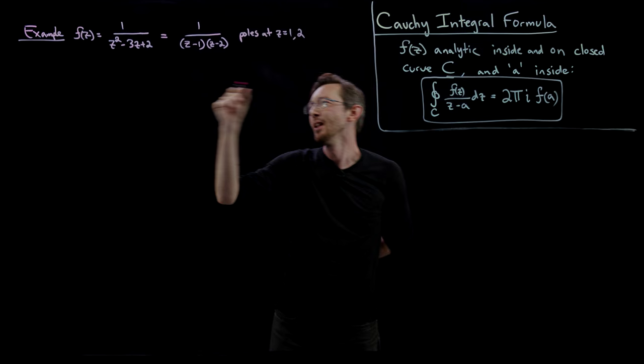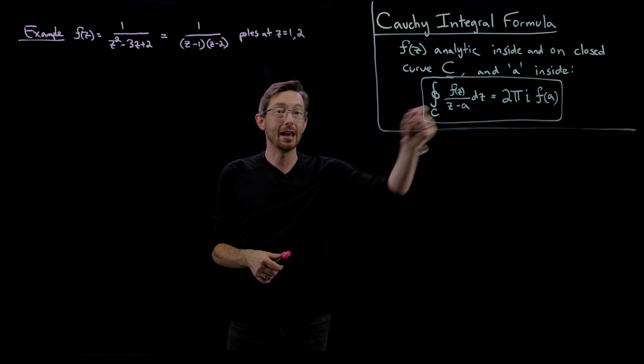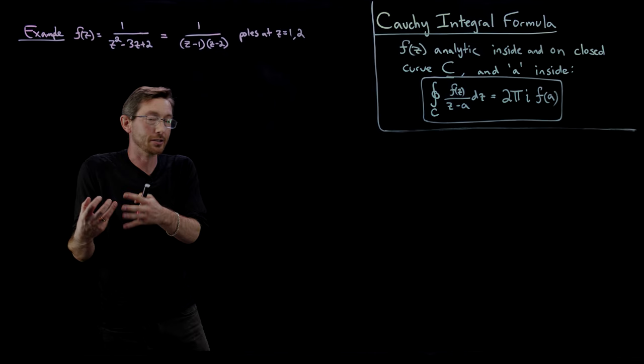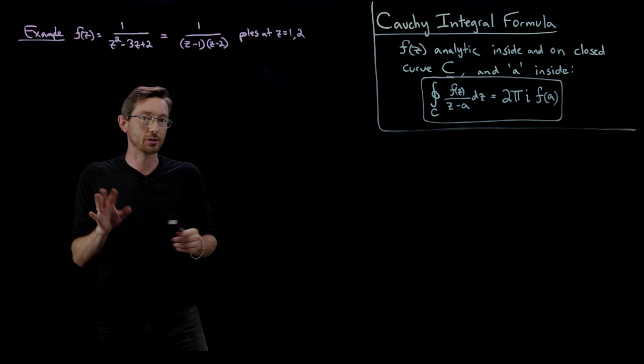These first order singularities like one over z minus a — we call that point a a pole of the system. It's a first order singularity, a pole. And those are the ones that have that kind of important residue that integrates up to something like two pi i. You can rewind to the previous lectures to see how this was derived; probably the last two lectures are the important ones.